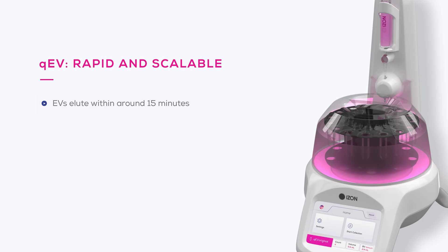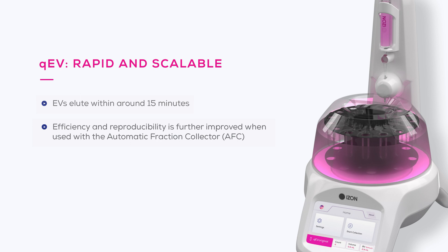However, while QEV columns are an effective and efficient tool for EV isolation, they are just one part of the puzzle. Further efficiency and reproducibility can be achieved when QEV columns are integrated into the Automatic Fraction Collector, or AFC, which guides you through the isolation process and introduces the valuable element of automated volume measurement and collection. The AFC also allows you to get on with other tasks while isolation is occurring, allowing you to scale and streamline your methods and save you precious time in your day.